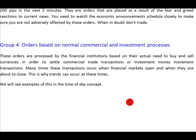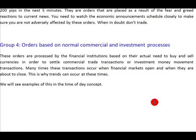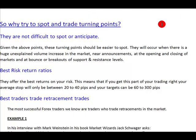The fourth group of orders are based on normal commercial and investment activities. These are processed by financial institutions based on the actual need to buy and sell currencies in order to settle commercial trade transactions or investment movements within the market. These are normal activities and occur more or less at the open or close of financial markets. Now that we understand a little bit about what moves the market, why should we try to spot and trade turning points?